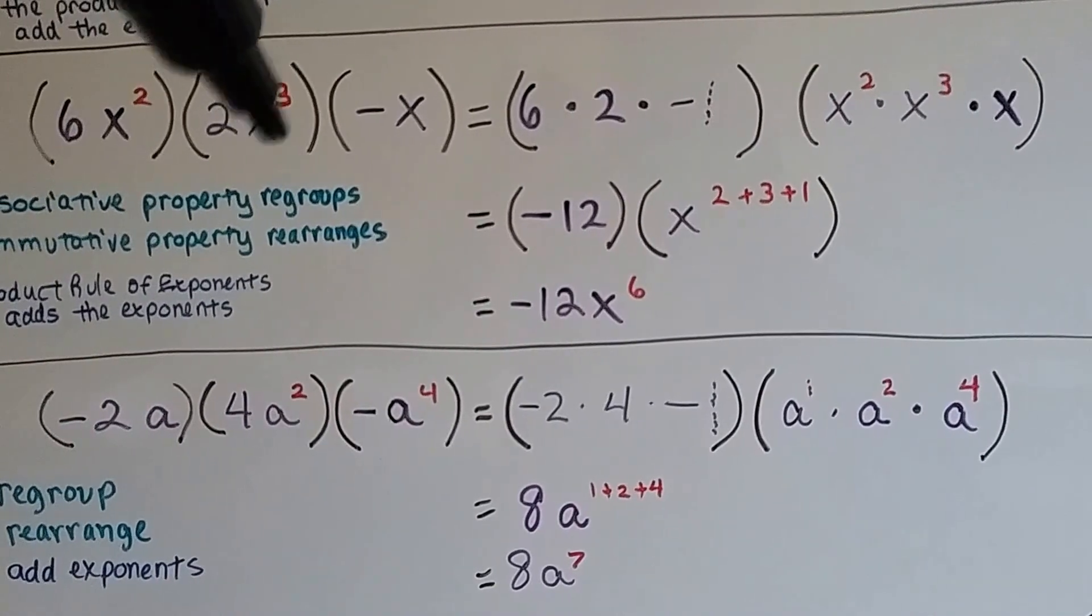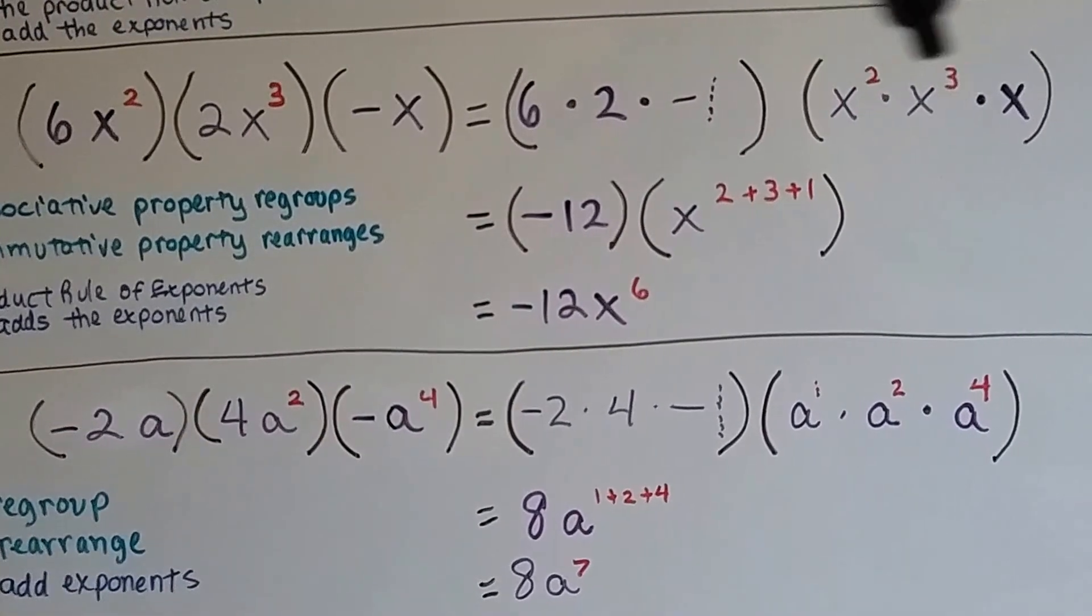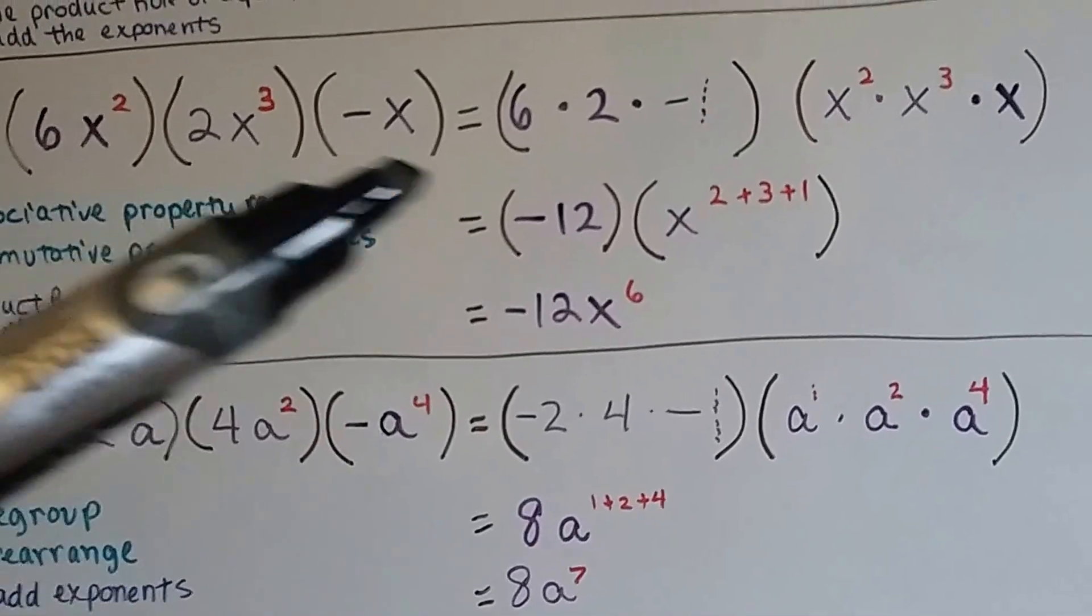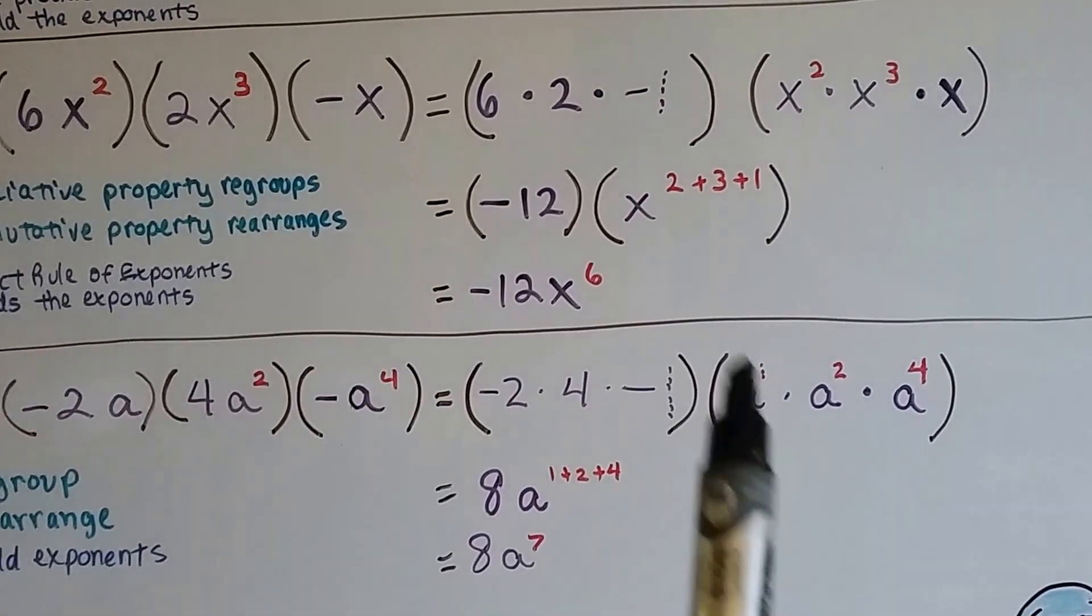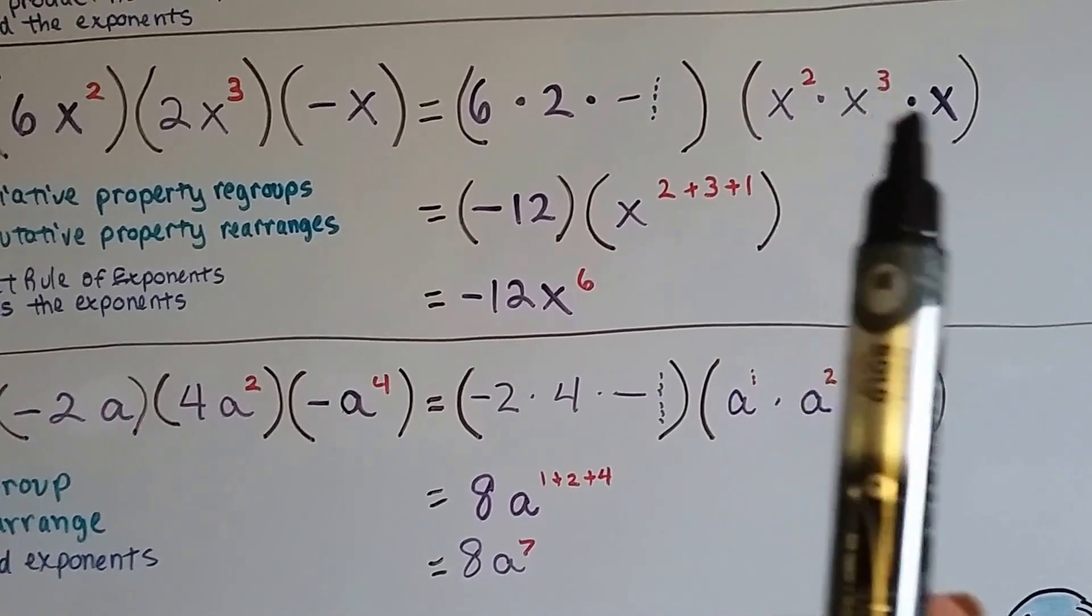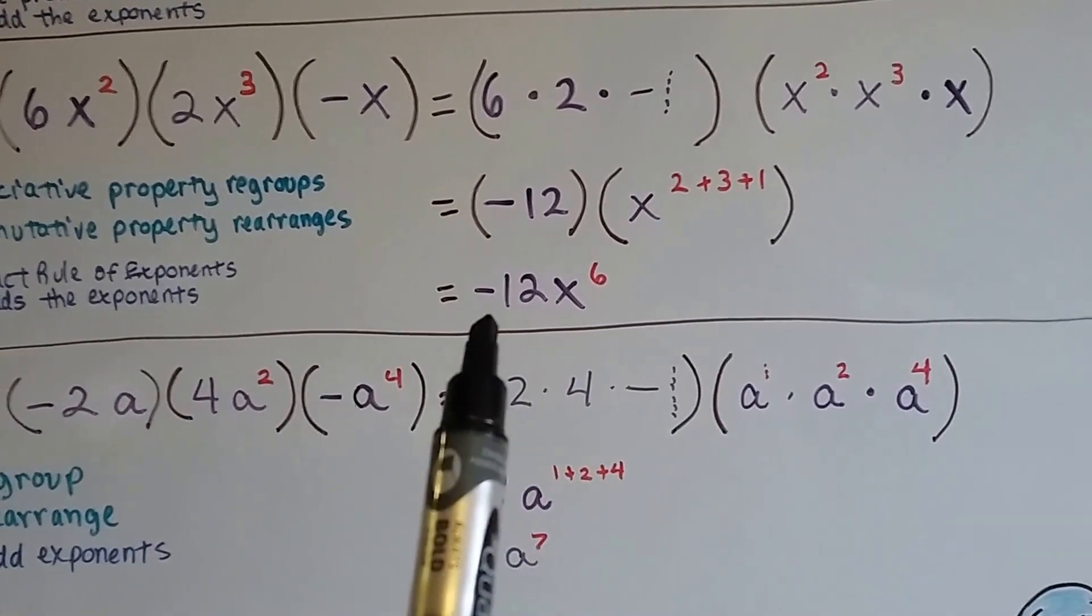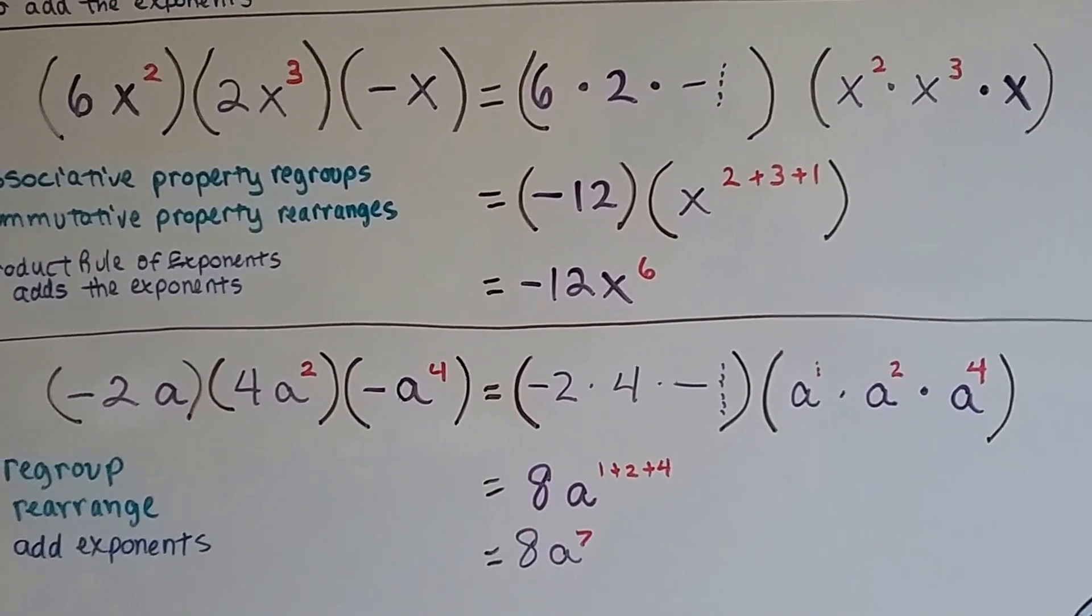We separated that invisible negative 1 from the x. So, now we've got an x squared, x to the third power, and an x that we can put together. 6 times 2 is 12 times negative 1 is negative 12. This is x to the 2 plus 3 plus 1. We get negative 12x to the sixth power.